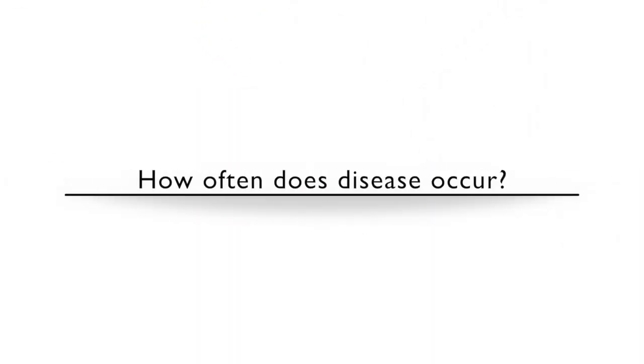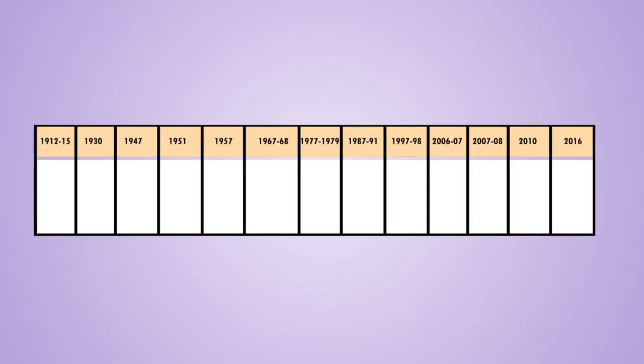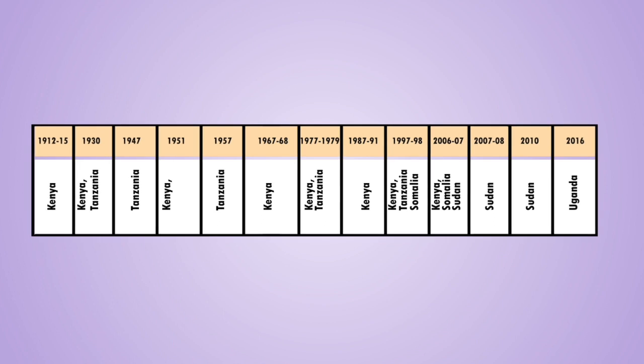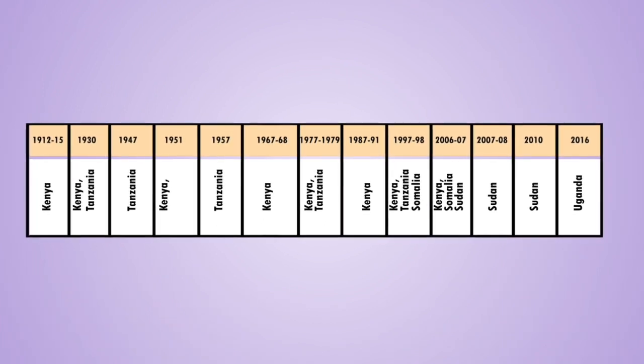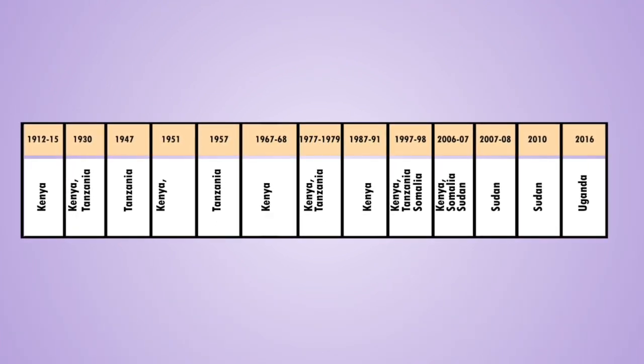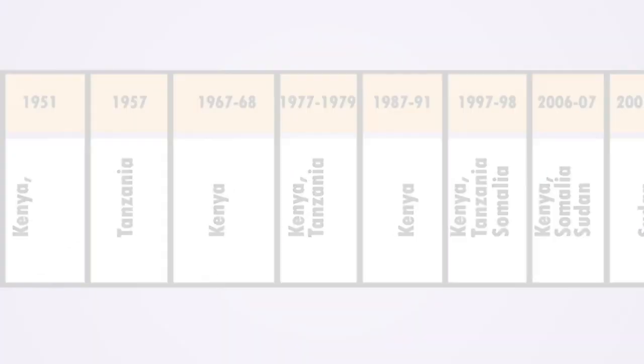How often does the disease occur? Rift Valley Fever outbreaks occur after long intervals of 5 to 15 years. A few cases may occur during the normal rains, but these often go undetected.